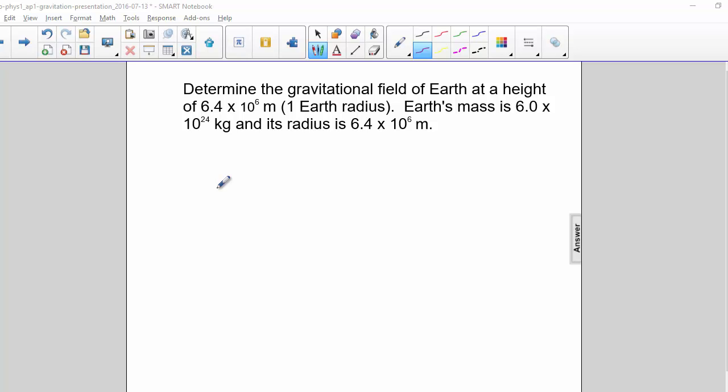Determine the gravitational field of Earth at a height of 6.4 × 10^6 meters, which is one Earth radius. Earth's mass is 6.0 × 10^24 kilograms, and its radius is 6.4 × 10^6 meters.